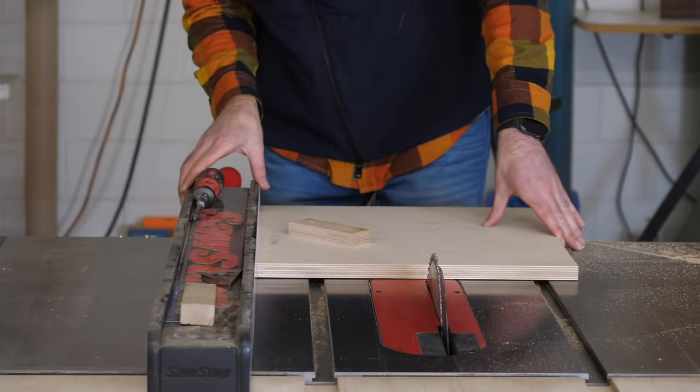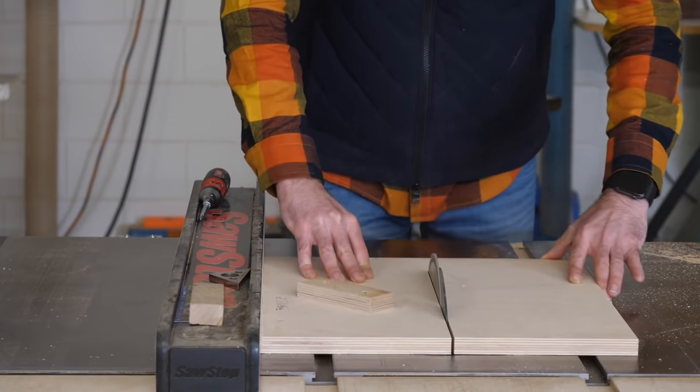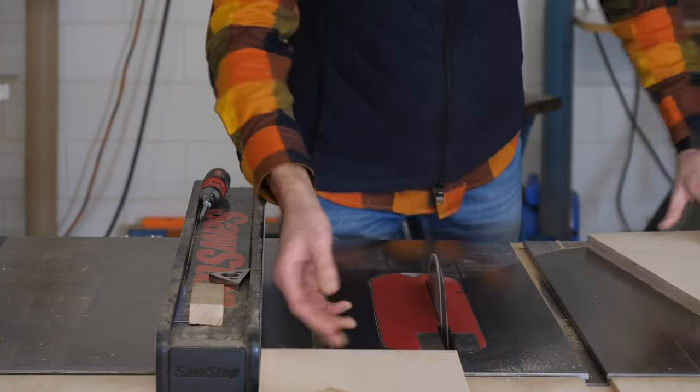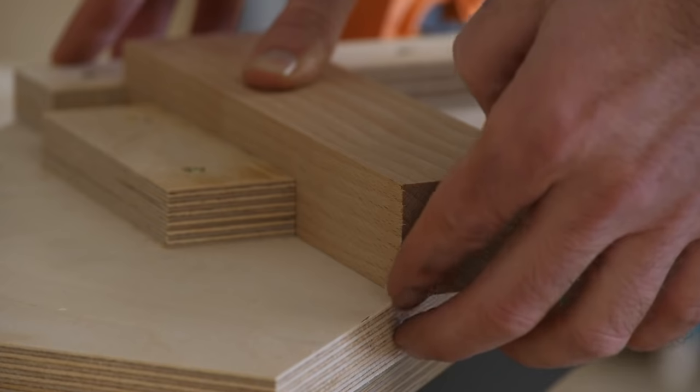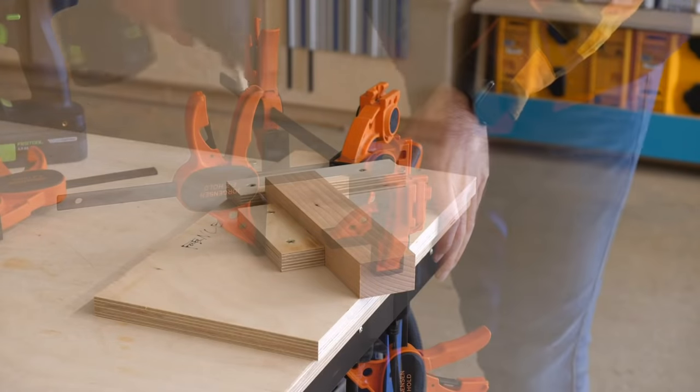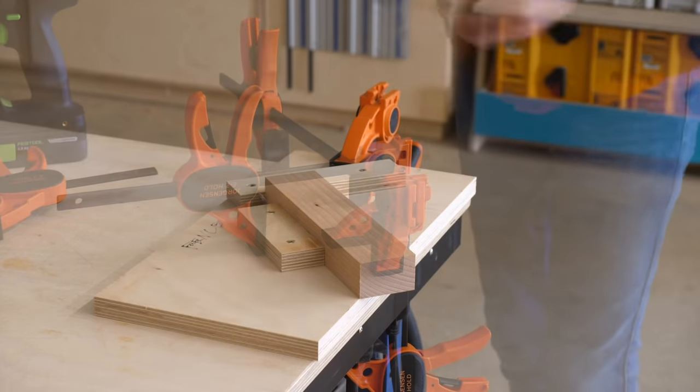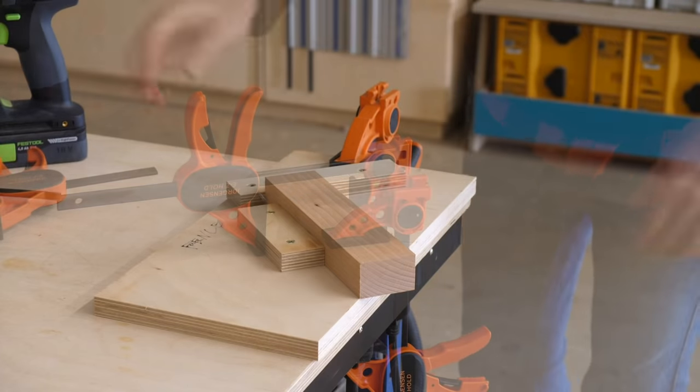Then reposition your table saw fence to eight inches and rip the sled in half. Now we're going to place one of our horizontal leg sub-assembly pieces on the fence so that the front corner is just hanging off of the cut edge of your sled. Then clamp it in position and reattach your other positioning fence on the opposite end of the workpiece to act as a stop.